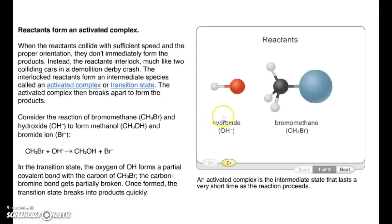So, let's look at an example. We're going to start out with hydroxide. Hydroxide is OH negative. And what does that negative tell us again? It has a negative one charge, which means it gained one electron. So, it's an OH with an extra electron. And my other reactant is bromomethane, which is CH3Br. So, one carbon, three hydrogens attached to a bromine. And they are going to react. Now, again, when reactions collide, they have to have enough energy, so enough speed, and the proper orientation. They don't immediately form products. Instead, the reactants interlock, much like two cars colliding in a demolition derby crash. The interlocked molecules form an immediate species, or in other words, a big blob. But, immediate species sounds a little better than big blob. And we call that big blob activated complex, or the transition state. Then, the activated complex breaks apart to form the products.